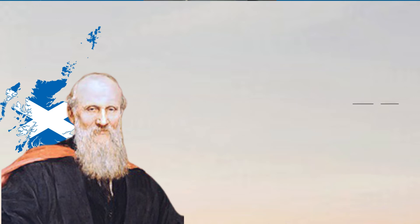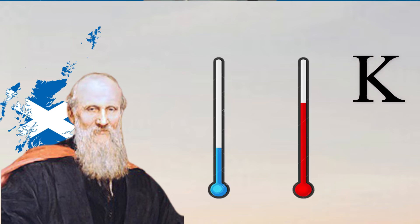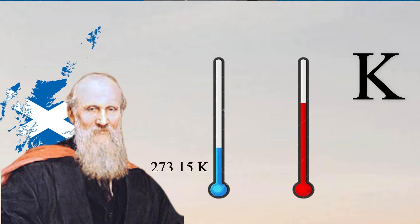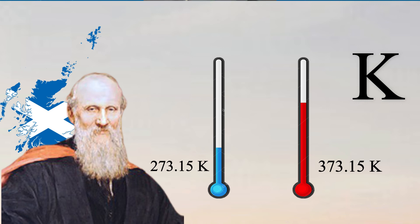The Kelvin scale uses the same unit of division as the Celsius scale. However, it resets the zero point to absolute zero, which is -273.15 degrees Celsius. The freezing point of water is therefore 273.15 Kelvin, and 373.15 Kelvin is the boiling point of water. Since there are no negative numbers on the Kelvin scale, because theoretically nothing can be colder than absolute zero, it is very convenient to use Kelvin when measuring extremely low temperatures in scientific research.